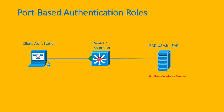The next role is the authenticator. It's usually the switch or ISR routers, and it acts as the proxy between the client and the authentication server. Here you configure the port to force 802.1X EAP negotiation with the clients, and you define the RADIUS server that will be used for authentication.